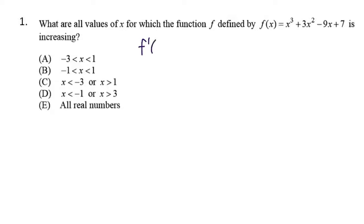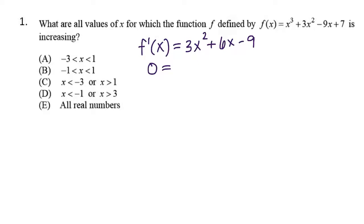We have f prime of x equal to 3x squared plus 6x minus 9, and we're going to set this equal to 0, because we need to find that critical point. If we set this equal to 0, we can divide everything through by 3, so we have x squared plus 2x minus 3.